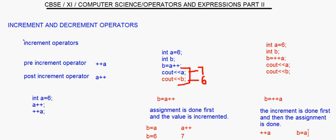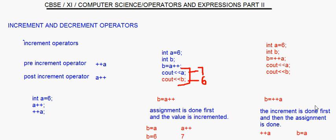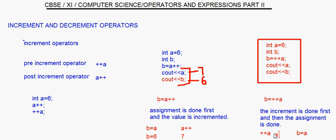For pre-increment, ++a comes first. Since a's value is 6, ++a makes a equal to 7. Then b = a means b also becomes 7. So when we print a and b, both a and b are going to give the value 7.